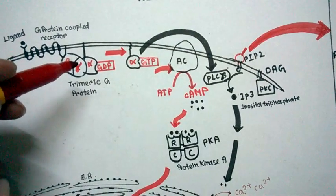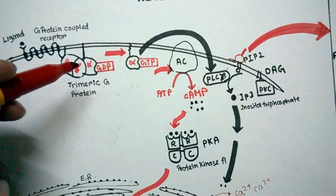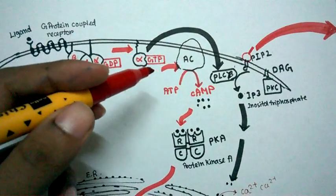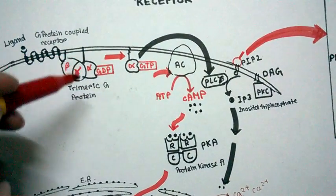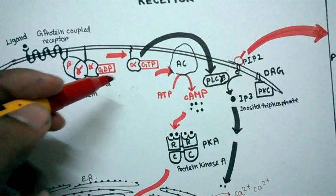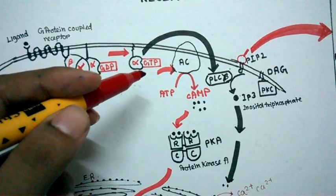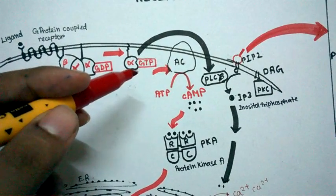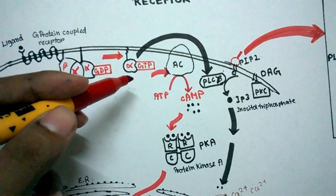The trimeric G protein now exchanges its GDP with GTP. Once bound with GTP, this alpha subunit is activated and dissociates from the beta-gamma partners.